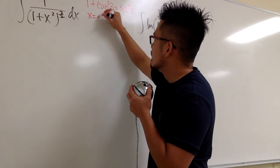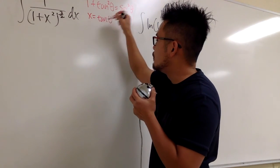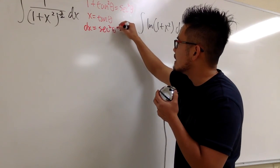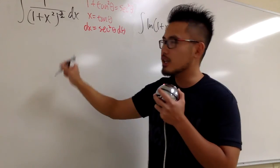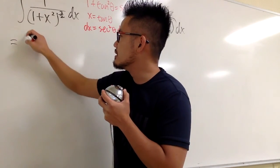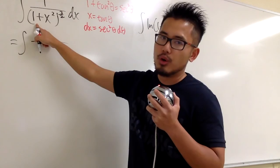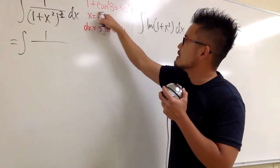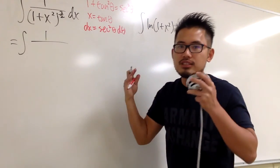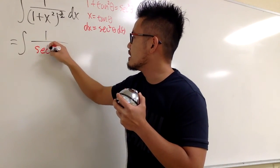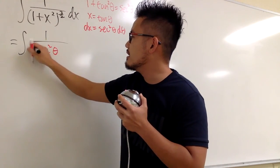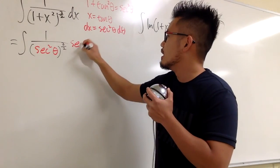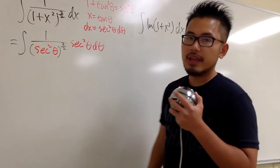x is equal to tangent theta, and differentiating this equation we get dx equals secant squared theta d theta. So now we can take this integral into the theta world. This is the integral of 1 over — 1 plus x squared, where x is tangent theta — giving us secant squared theta in the parentheses, raised to the 3 over 2 power, and dx is secant squared theta d theta.